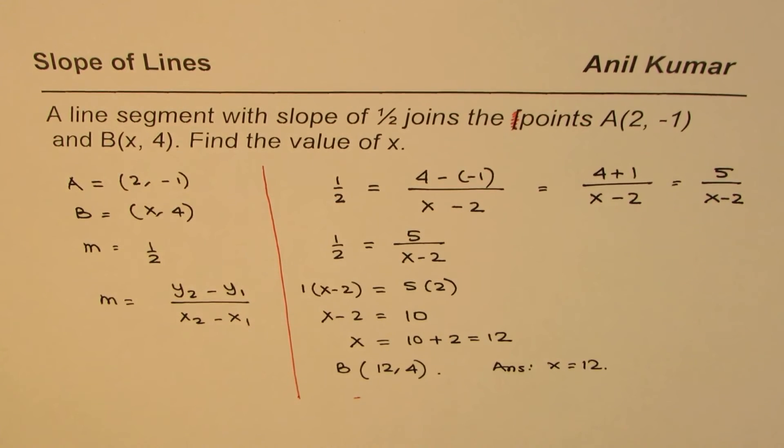So that is how you could find coordinates of a point if you are given another point with the slope on a line segment.